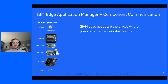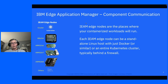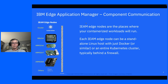The edge nodes are the places where your containerized workloads will actually run. Each edge node can be either a standalone Linux host that requires Docker or something similar, or an entire Kubernetes cluster, and they're all typically deployed behind a firewall.